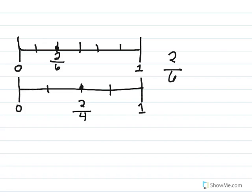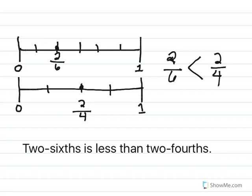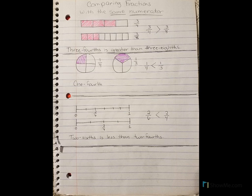Now I have the two fractions to compare. I can see on my number line that when I divided it into sixths, the pieces were much smaller than when I divided it into fourths. That tells me that two-sixths is less than two-fourths. I can also tell on my number line that two-sixths is closer to the zero than two-fourths is — that's another sign that it's less than. And now we have it in words: two-sixths is less than two-fourths. Your notes should now look like this. We just have one section left.